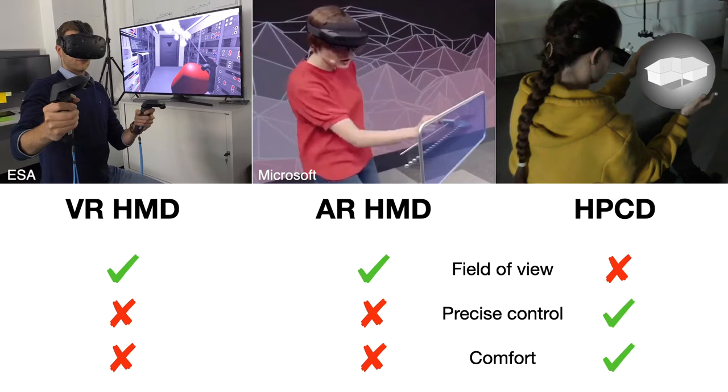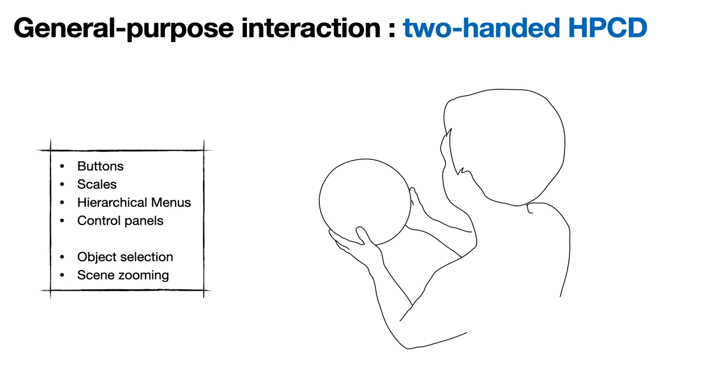But for this, general-purpose interactions must be designed. In this work, we want to provide buttons, scales, hierarchical menus and control panels for two-handed HPCDs, and we also investigated object selection and scene zooming.